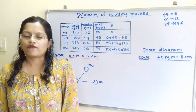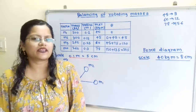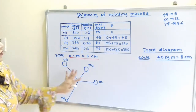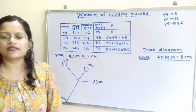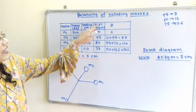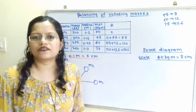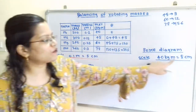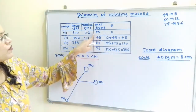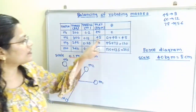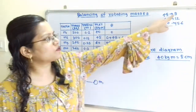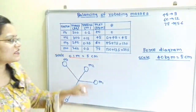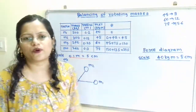Now we move to the graphical method. We use the M×R values and the space diagram drawn with the suitable scale. For the force diagram, a scale of 40 kg·m = 8 cm is chosen. So for M1R1=40: 8 cm; for M2R2=45: 45×8/40 = 9 cm; for M3R3=60: 60×8/40 = 12 cm; and for M4R4=78: 78×8/40 = 15.6 cm.